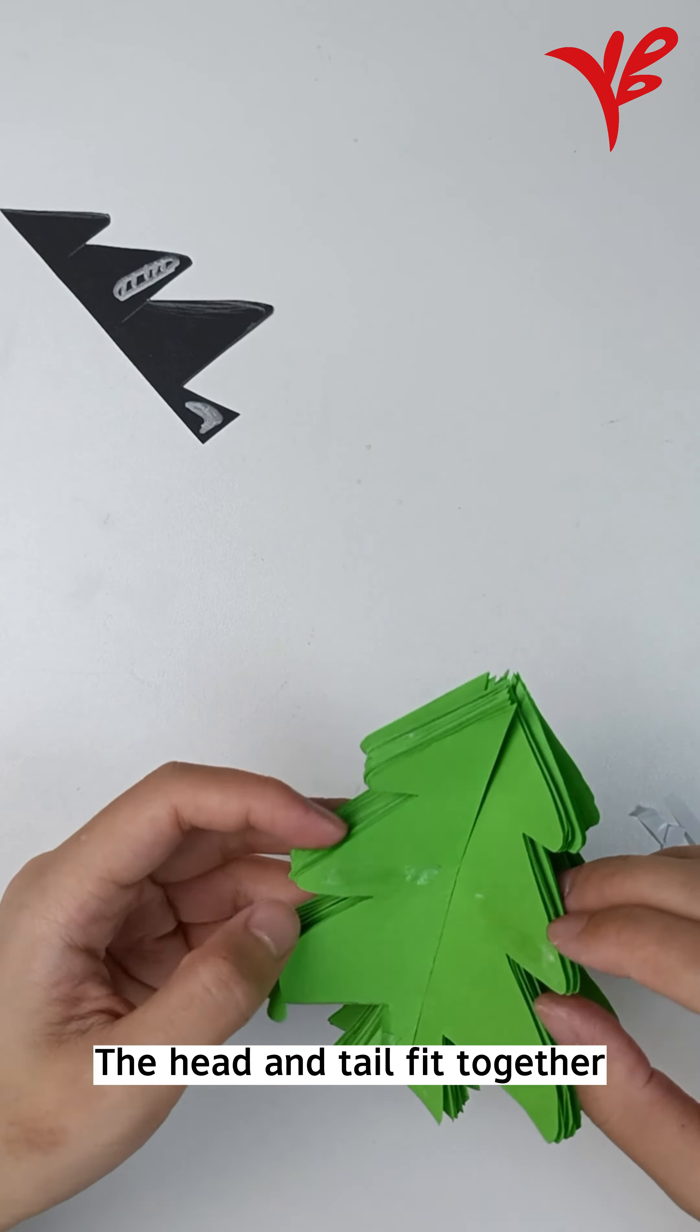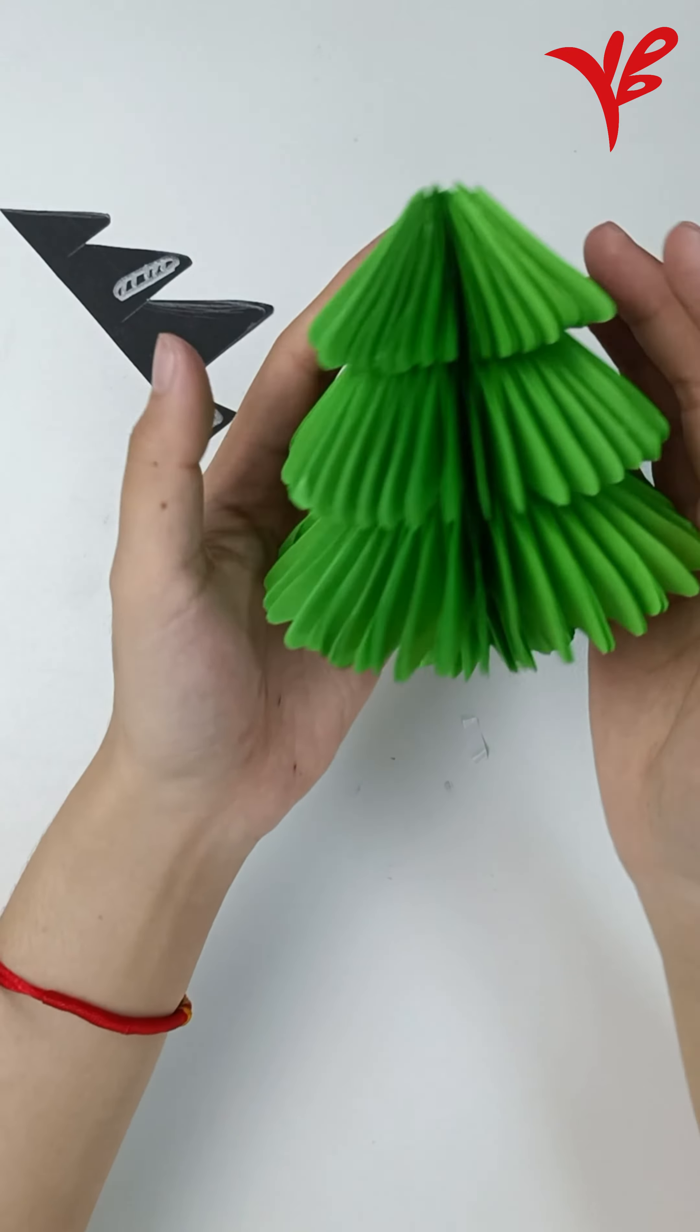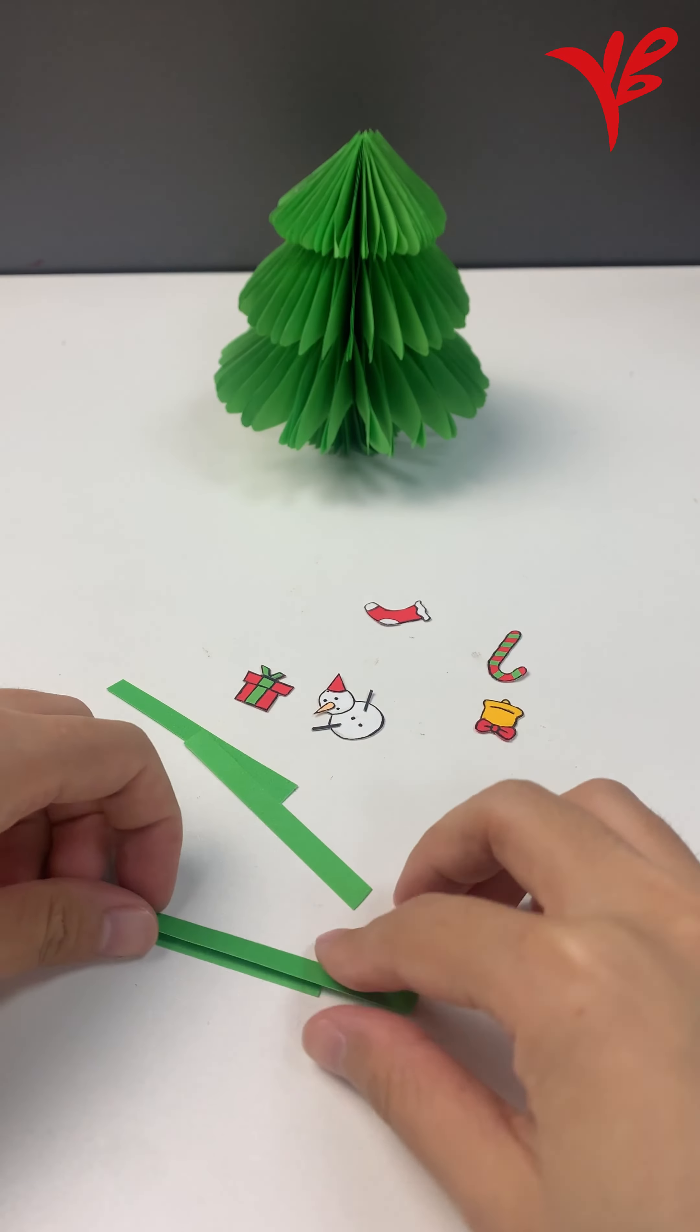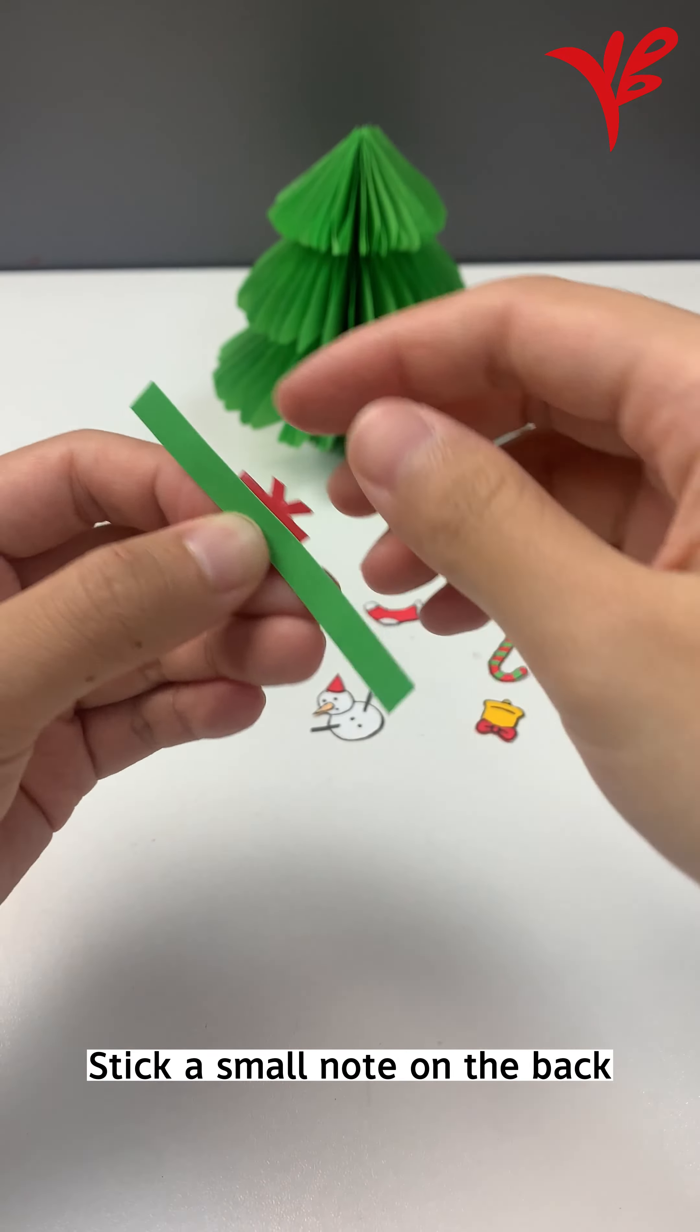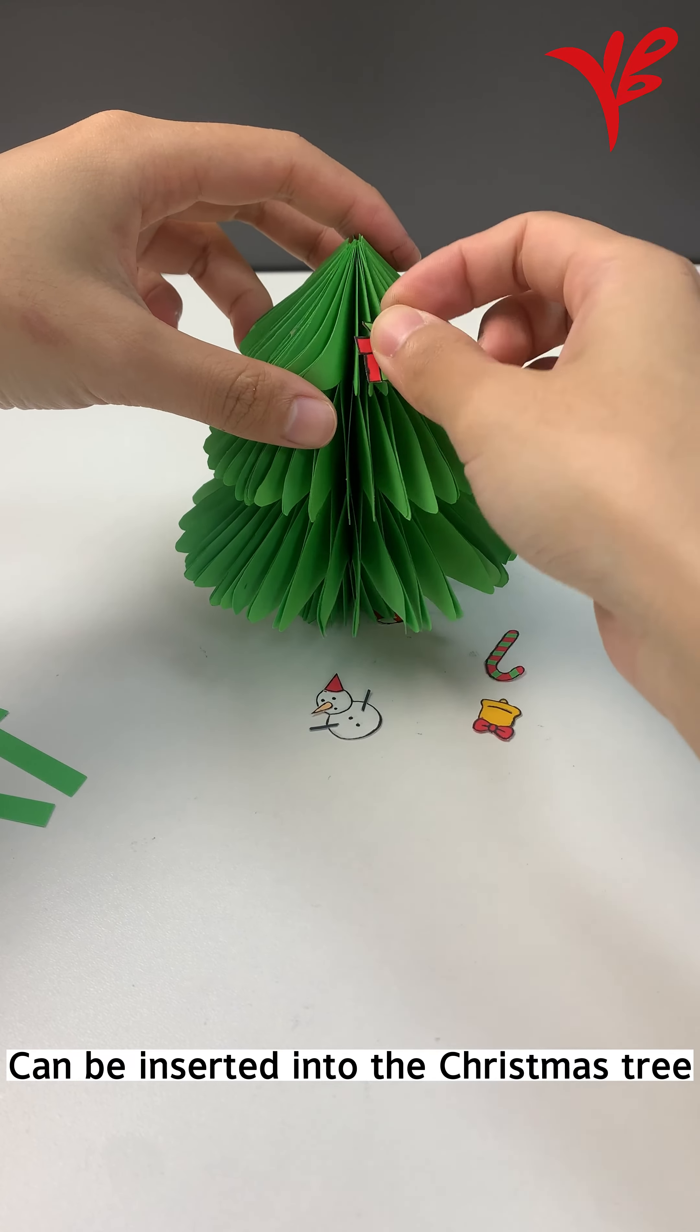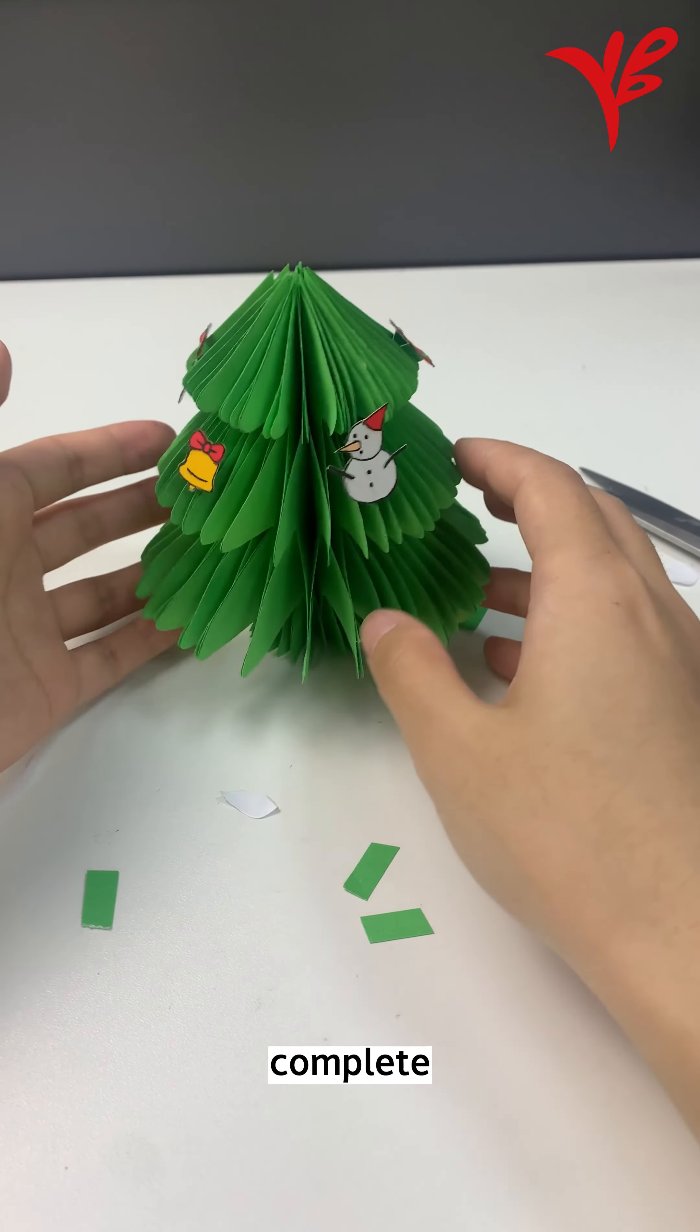The head and tail fit together. Christmas tree completed. Make some small decorations. Stick a small note on the back that can be inserted into the Christmas tree. Decoration complete.